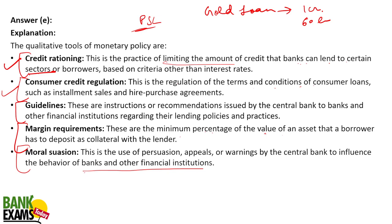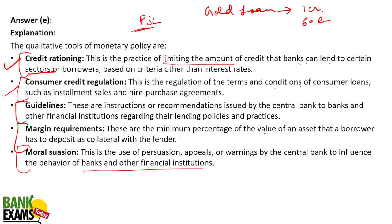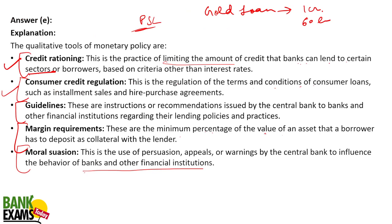Quantitative methods include SDF and MSF. Changes in policy rates are quantitative methods. Moral suasion, LTV (which is a kind of margin requirement), consumer credit regulation, and selective credit control are all qualitative methods. SDF — standing deposit facility — is a quantitative method.